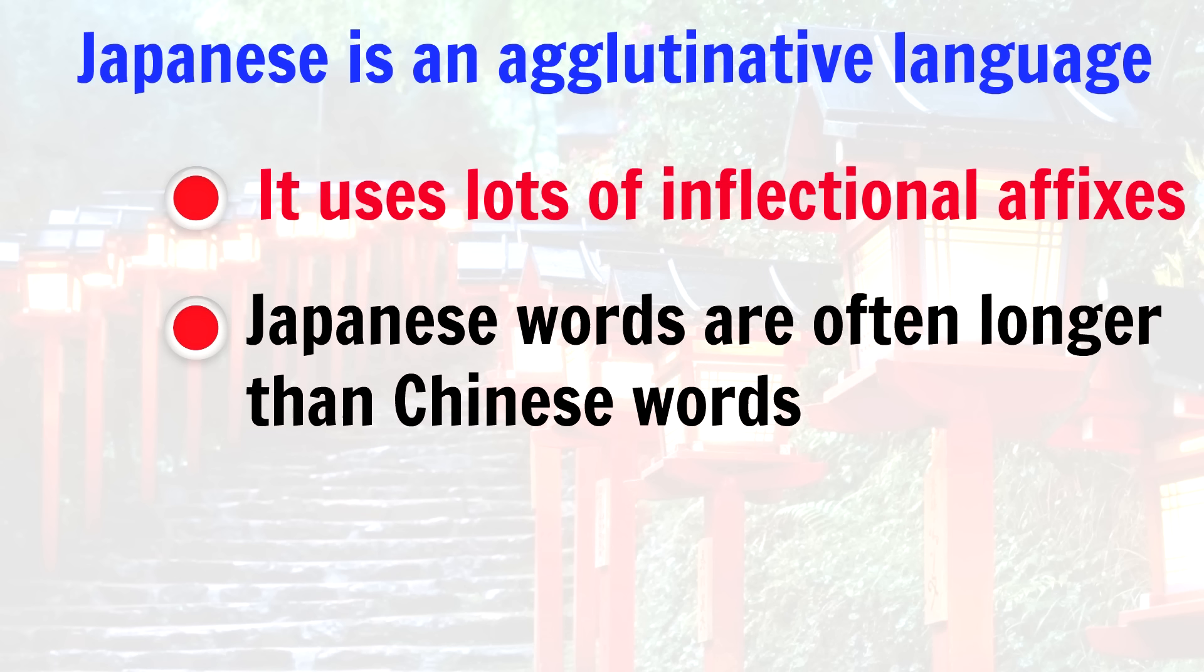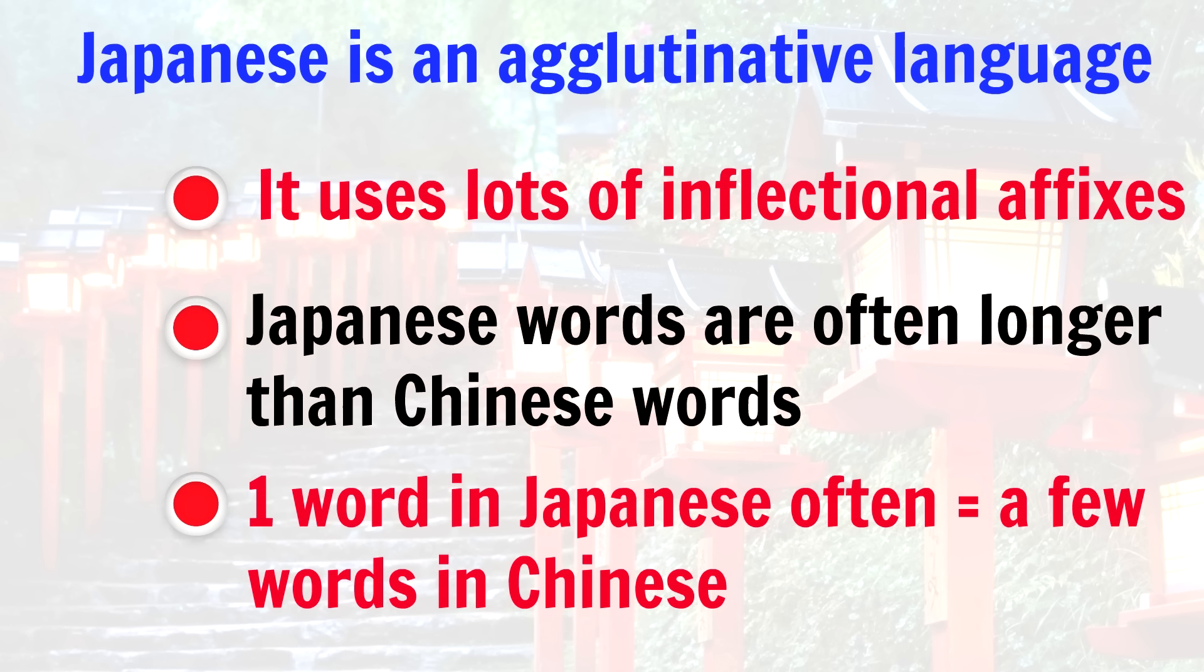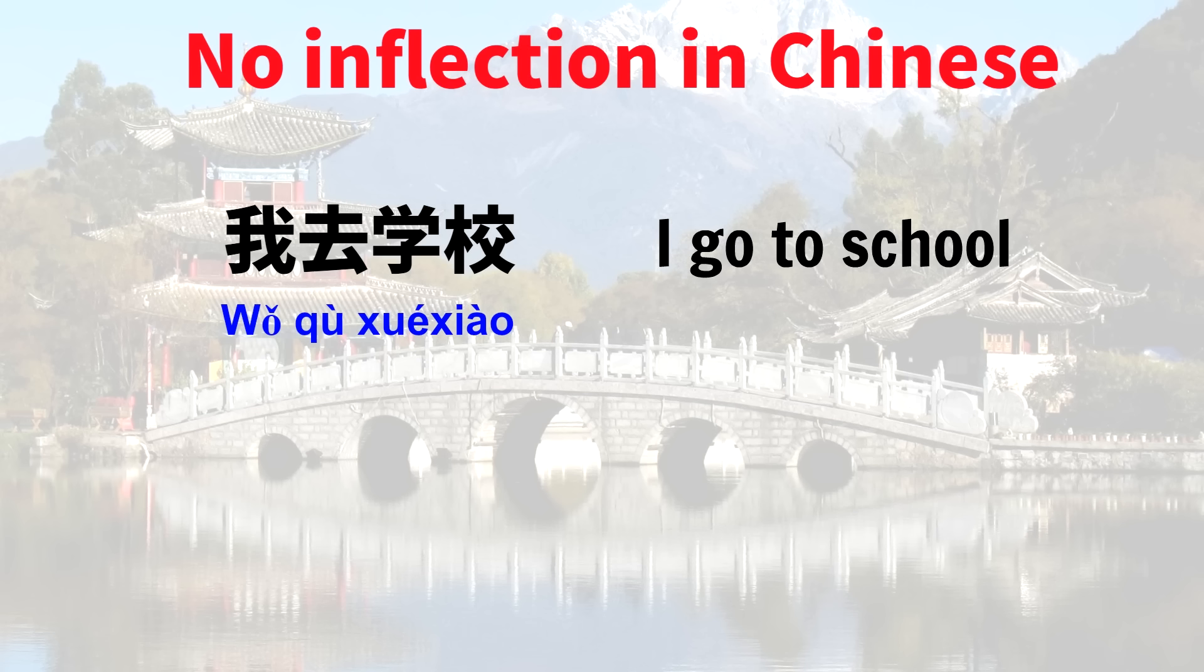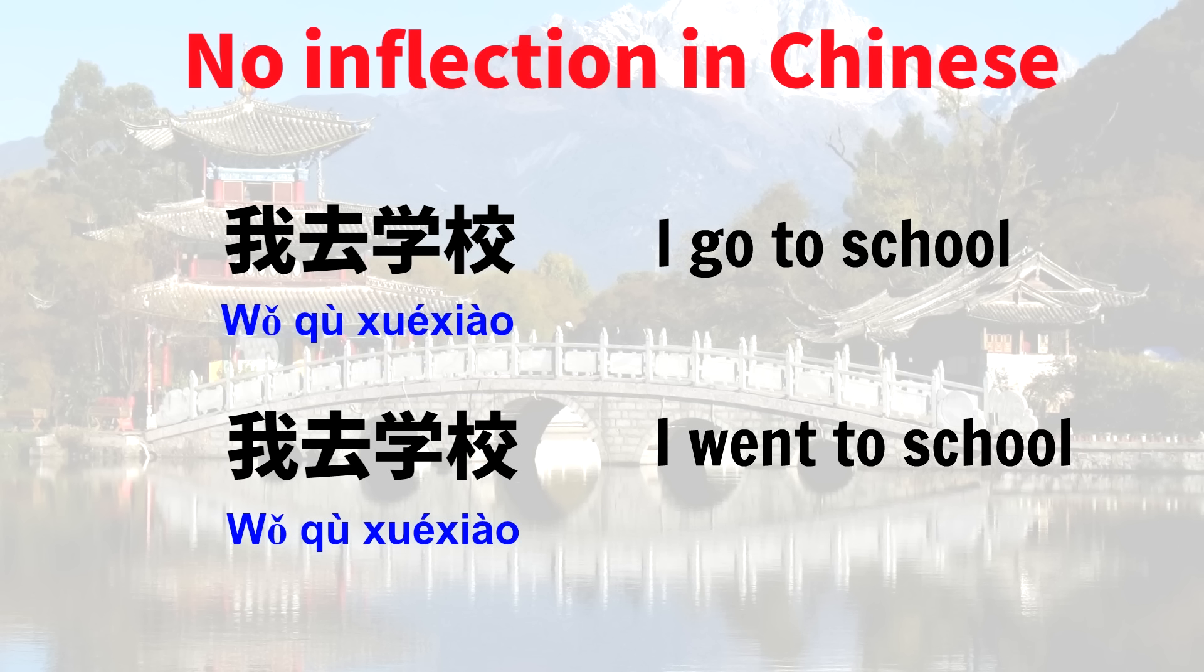In these Chinese sentences, we can see that there's no inflection. 我去學校. This sentence means I go to school. 我去學校. This sentence means I went to school. So no part of the verb is changed to indicate the past tense. We can show the past tense by just adding a time expression.